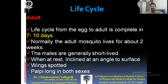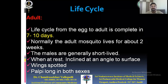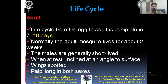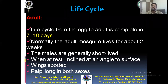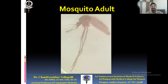The life cycle from egg to adult is completed in 7 to 10 days. The lifespan is different from the life cycle — the lifespan is 8 to 34 days. The adult normally lives about two weeks on average. Males are generally shorter-lived than females. When at rest, Anopheles mosquito is inclined at an angle to the surface. Wings are spotted and palpi are long in both sexes — in Culex, wings are unspotted and palpi are short.